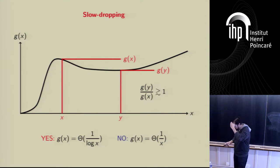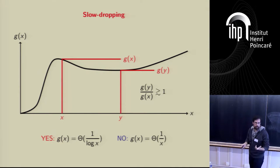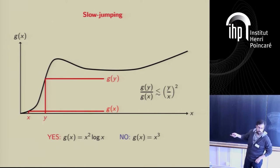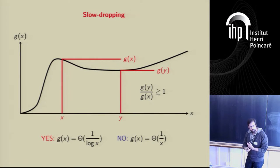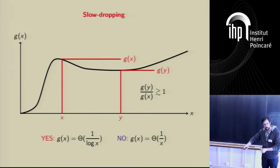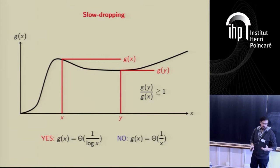In combination, slow jumping and slow dropping together guarantee that we can identify the g heavy hitters with a Count Sketch. Slow jumping says: if this item is the largest one in the stream, it's going to be an F2 heavy hitter so we can find it. Slow dropping says: if it's not the largest, we can hash in a bunch of different ways, and each heavy hitter will end up in different buckets. Running a Count Sketch on each bucket, the actual heavy hitters will be the largest frequencies in those buckets. Together, these properties say every g heavy hitter is also an F2 heavy hitter.